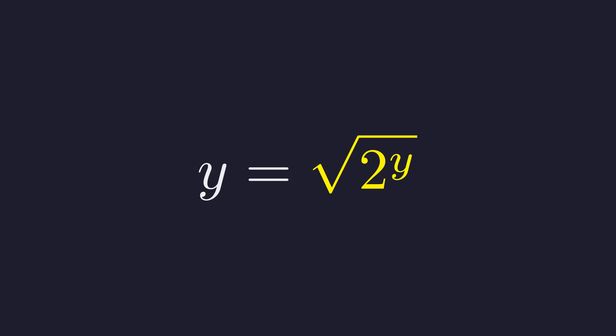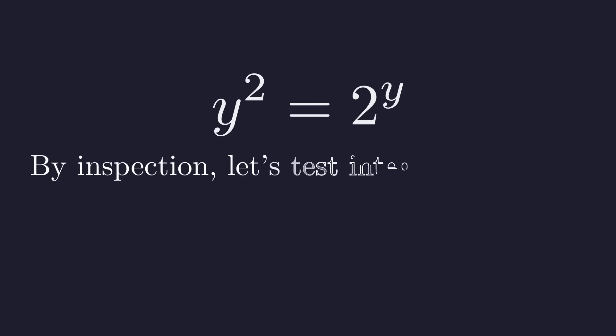y equals the square root of 2 to the power of y. To solve for y, we must first eliminate the square root. We achieve this by squaring both sides of the equation, which yields y squared equals 2 to the power of y. This is a transcendental equation, which can be difficult to solve algebraically. However, we can often find integer solutions by simple inspection.